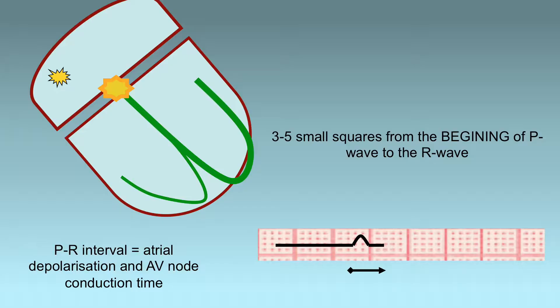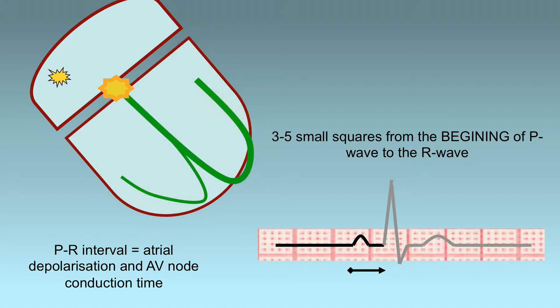Here we have an example of a P wave. The P wave morphology and size is largely dependent upon the atrial size and conduction rates. To re-emphasize, we measure the PR interval from the beginning of the P wave to the beginning of the QRS. In this case the PR interval is about four and a half squares and therefore just under 200 milliseconds, so this is normal.